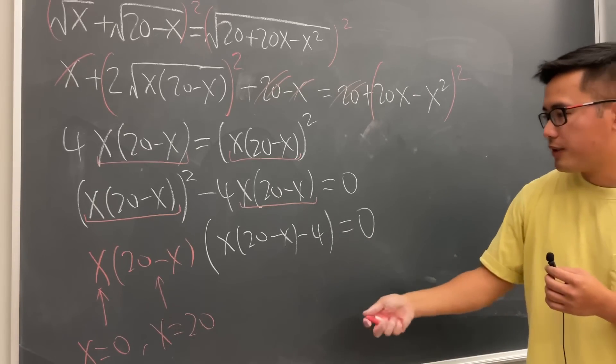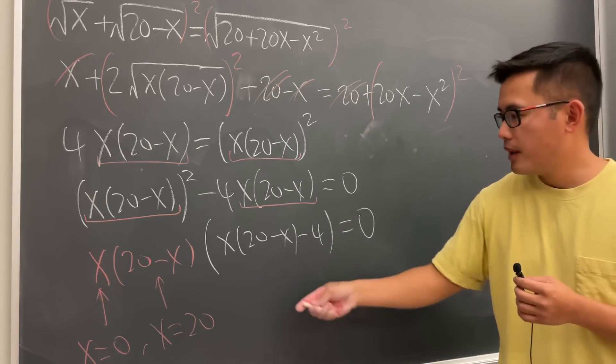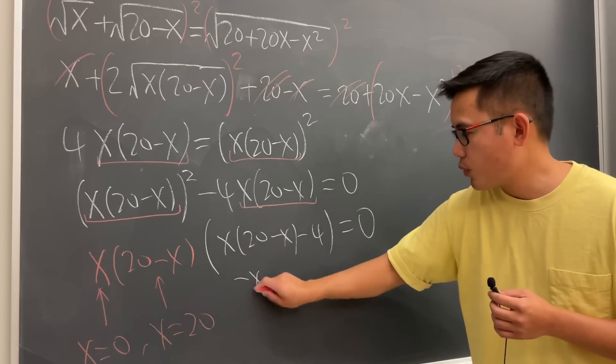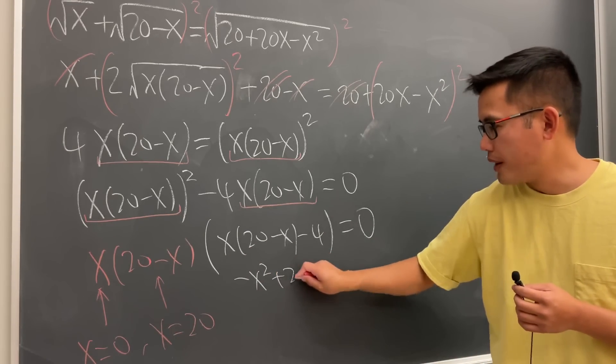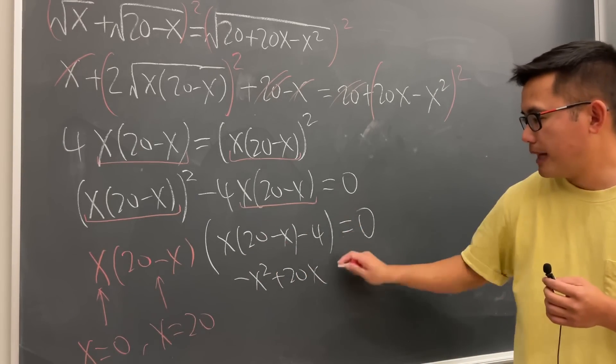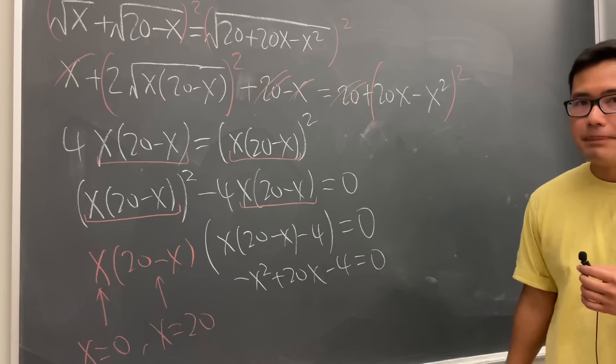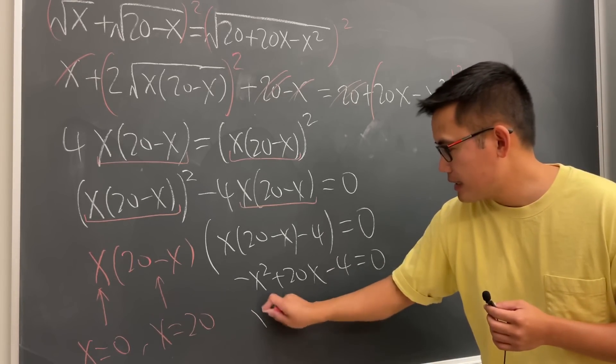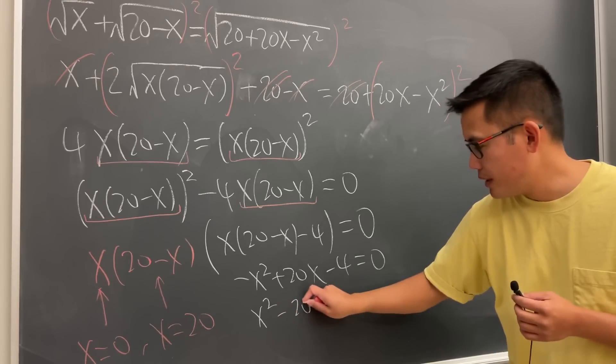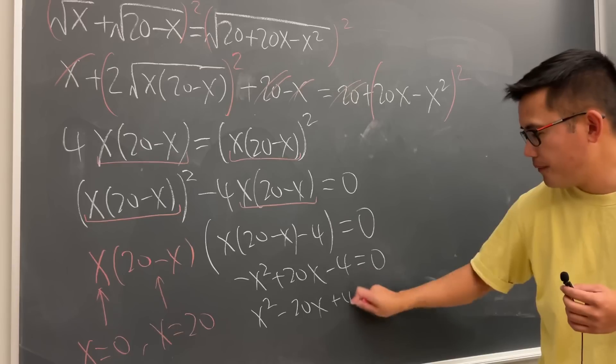But for this, of course, we have to put this to be 0. Multiply this out, we will get negative x squared plus 20x and then minus 4 is equal to 0. And just divide everybody by negative 1. So we get x squared minus 20x plus 4 is equal to 0.